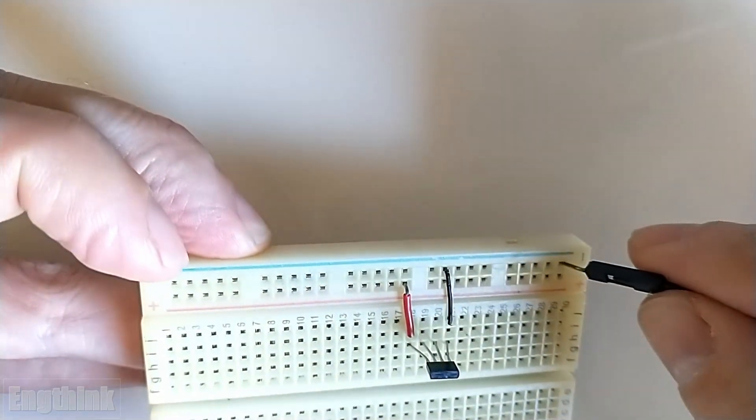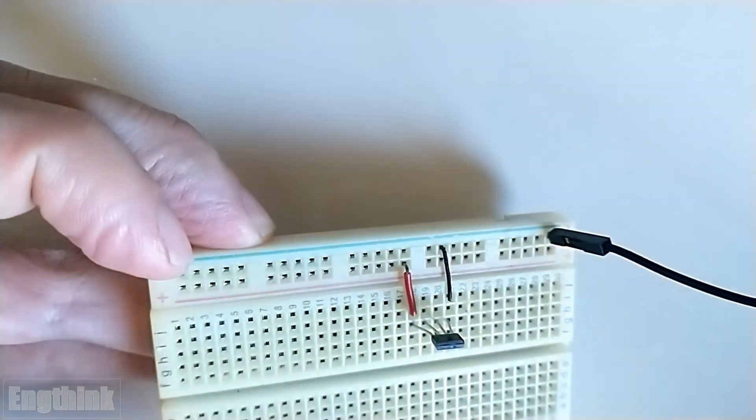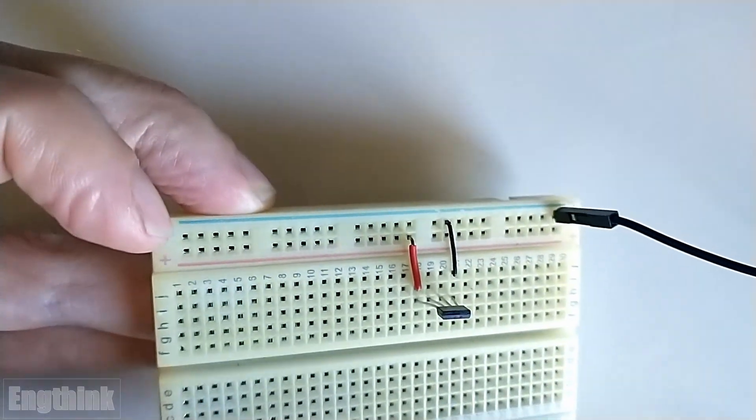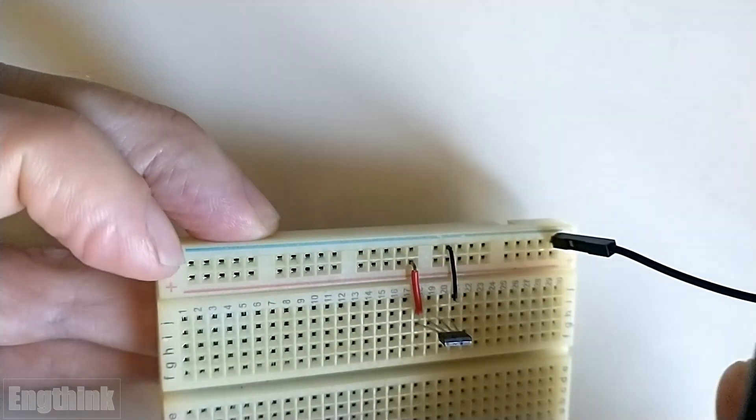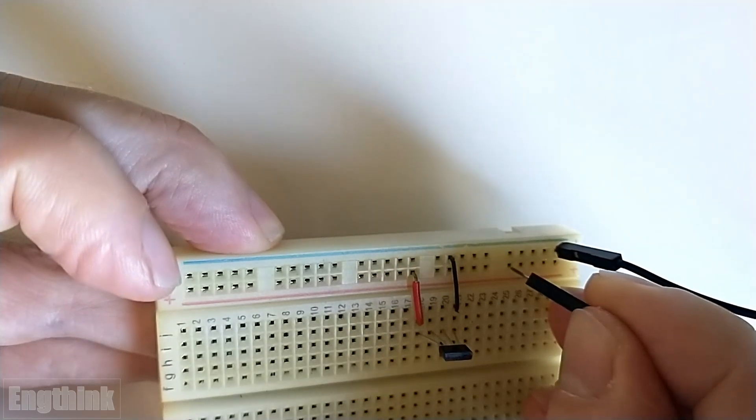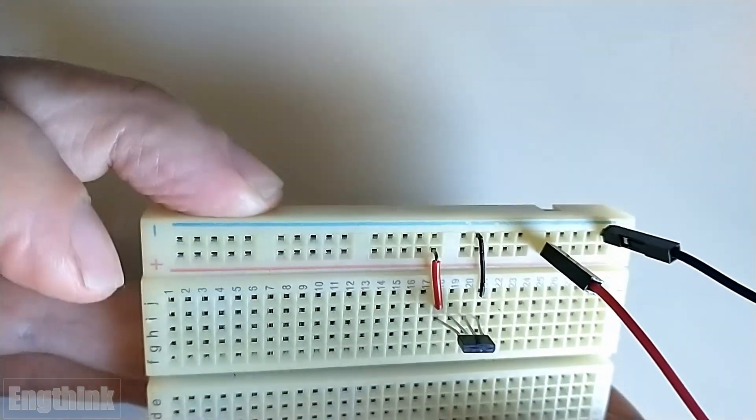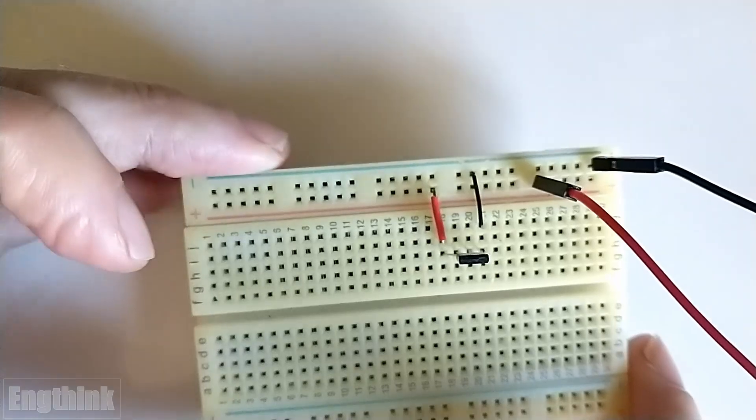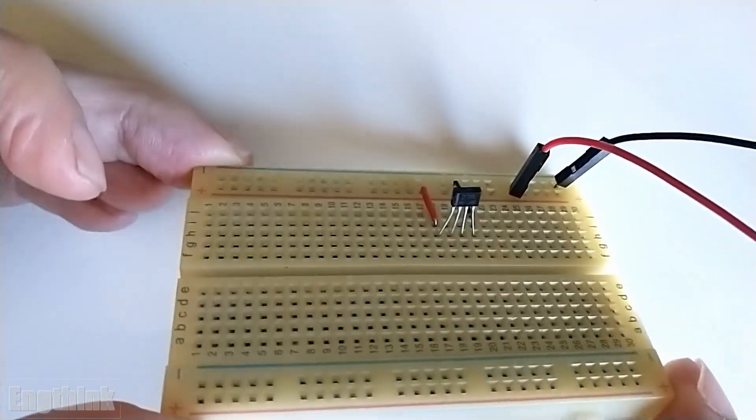In the upper line, the blue one, we have the negative and below we have the red line of the breadboard that is the positive. So far now we already have the sensor connected with the positive and negative with around five volts DC.